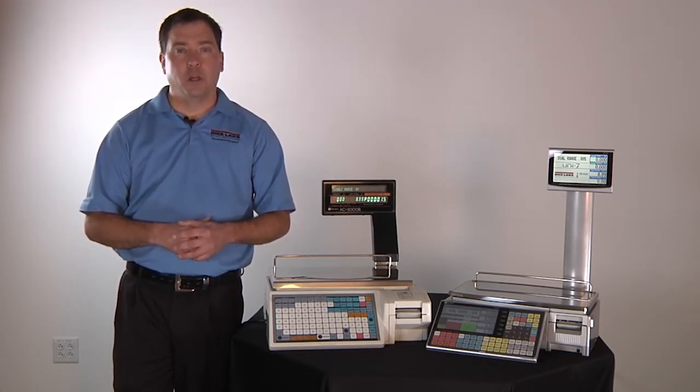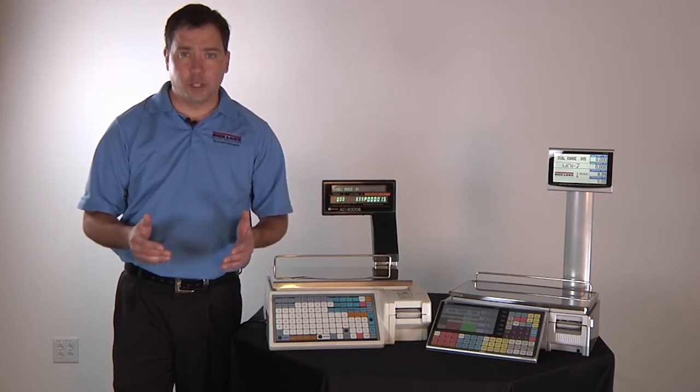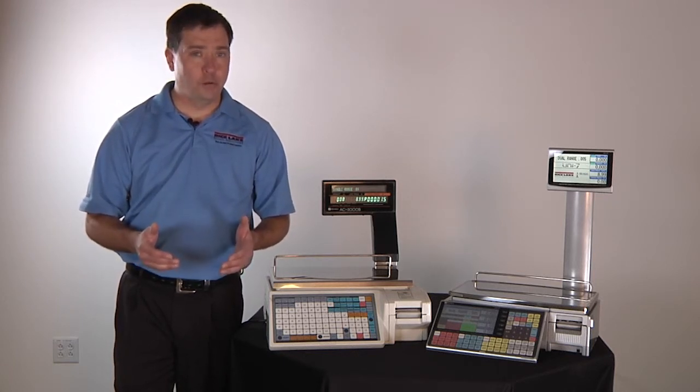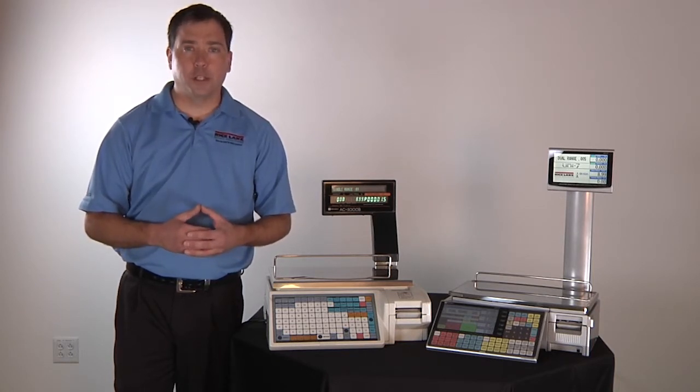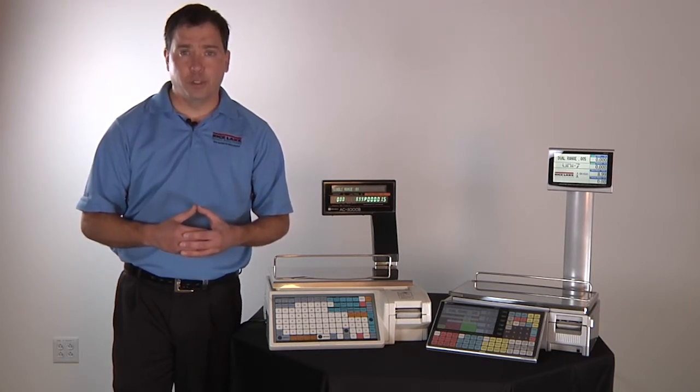Dual range weighing is simple. From 0 to 15 pounds the scale is going to register by 0.005 or five thousandths of a pound. And from 15 to 30 pounds the scale is going to automatically switch to 0.01.